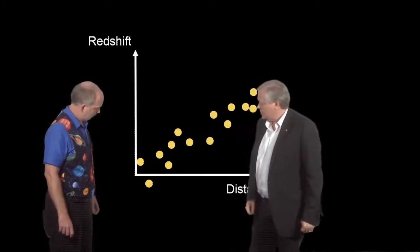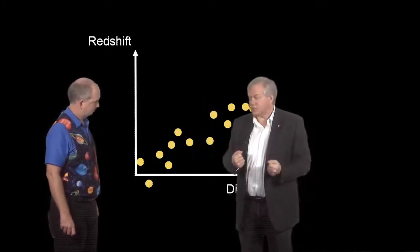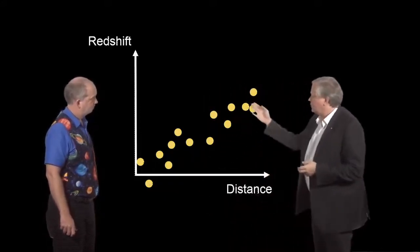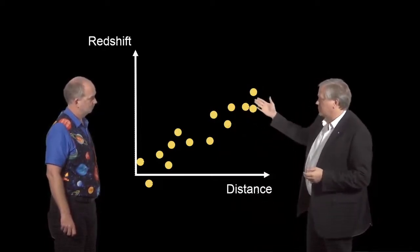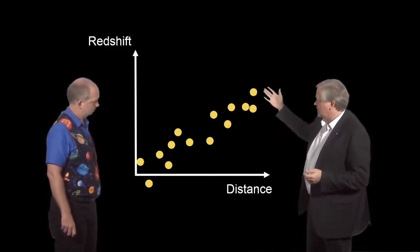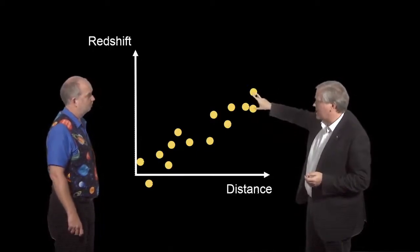But as you go further and further away, the effect of redshift becomes, you know, very large. And so it dwarfs the little scatter. But effectively, you just end up with this little scatter that just goes on forever and ever.